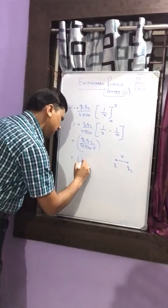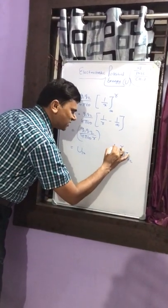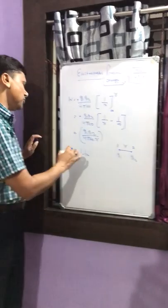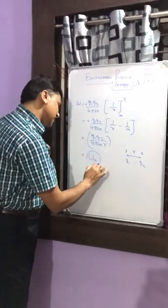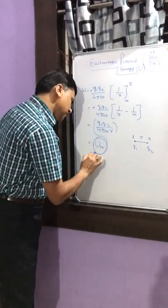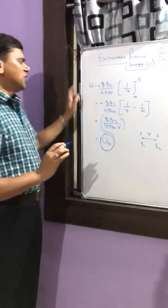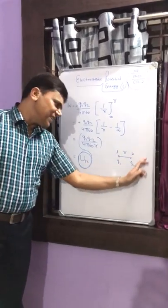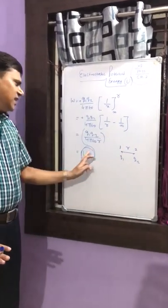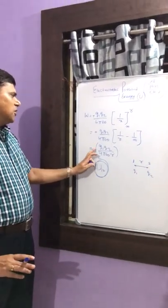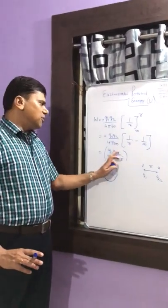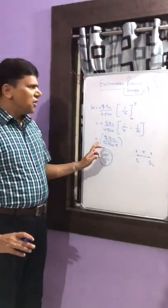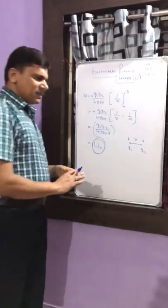So this is called U₁₂. If this is charge number 1 and this is charge number 2, then the potential energy of this system is equal to Q1 Q2 over 4π ε₀ r.